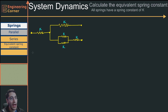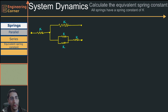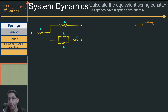Before I go through and simplify the springs, I want to go over what happens if we have springs that are in parallel — so springs that sort of look like this — and springs that are in series, so springs that look like this.